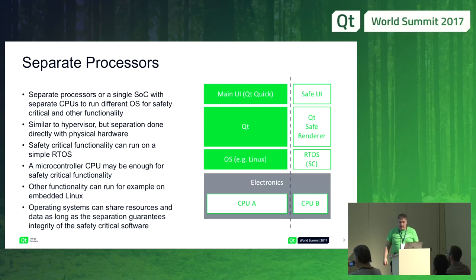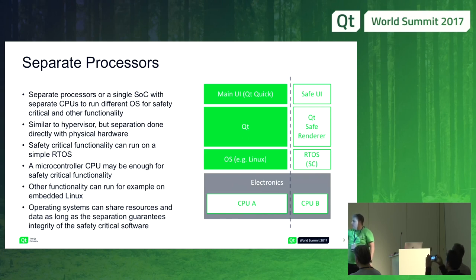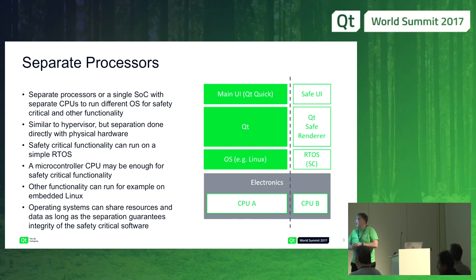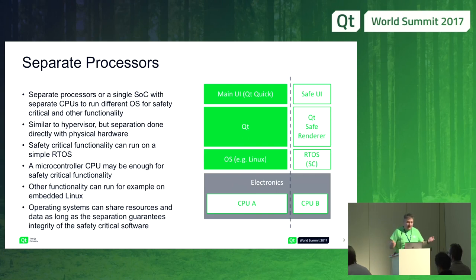A third architecture example is similar in principle to the hypervisor, but here we have actual physical electronics that are separated — two different CPUs. One CPU runs the real-time operating system and the safety-critical functionality, and the other runs the regular functionality of the system. Depending on what the safe UI is, this CPU can be much less powerful — even a microcontroller — while the other needs more processing power if it handles graphics and advanced functionality.